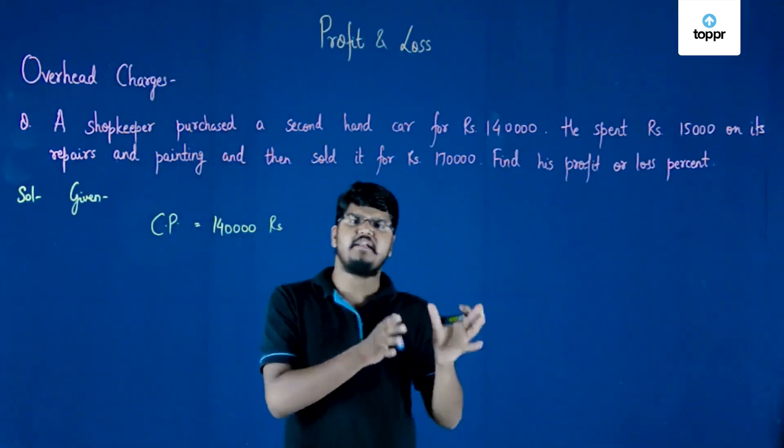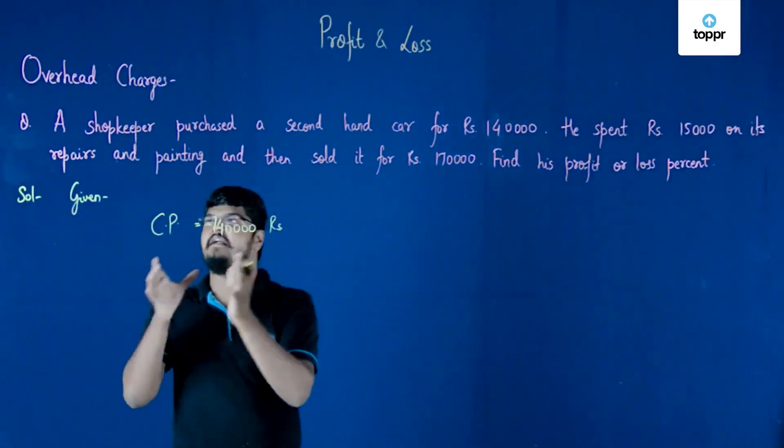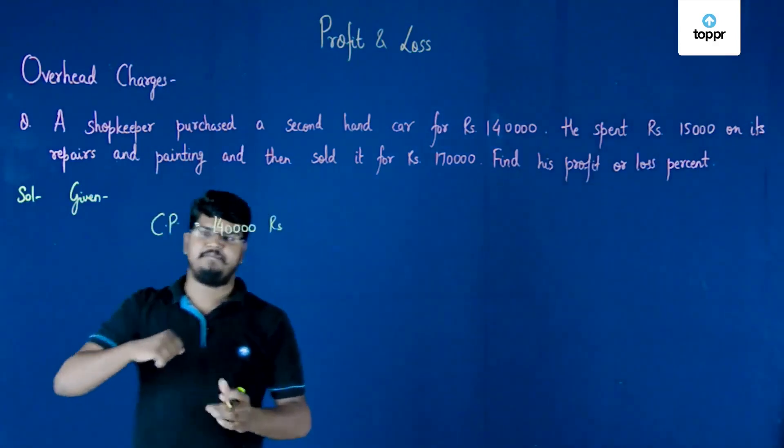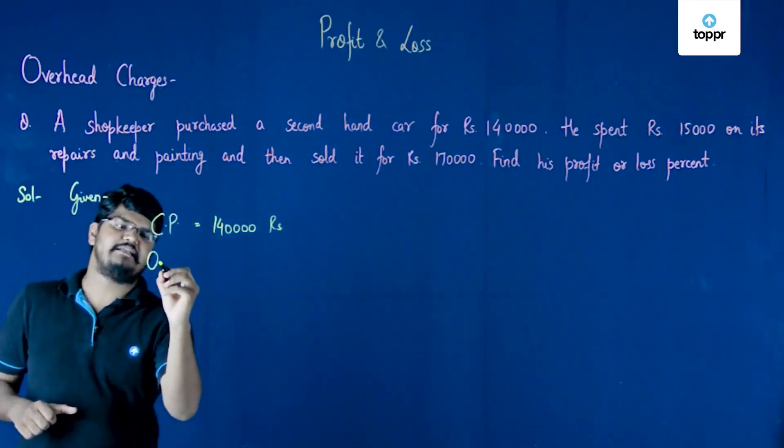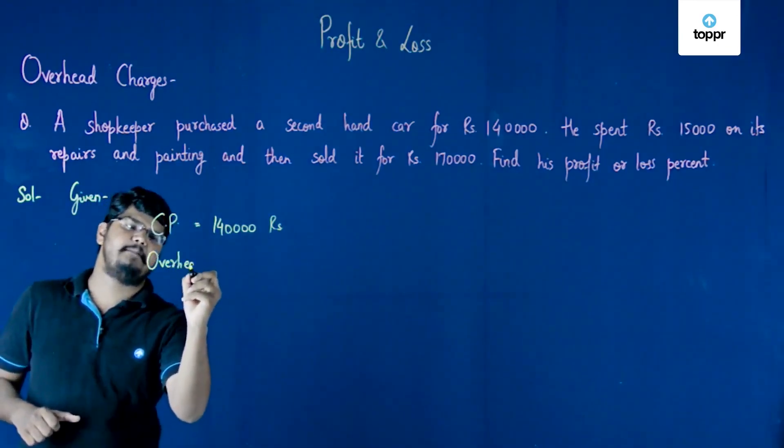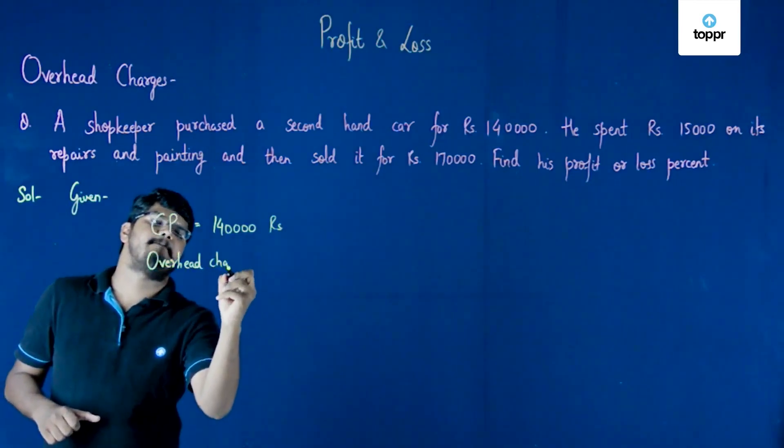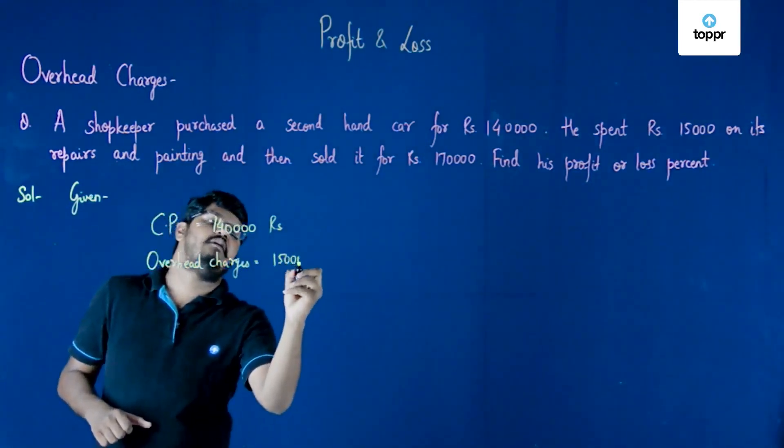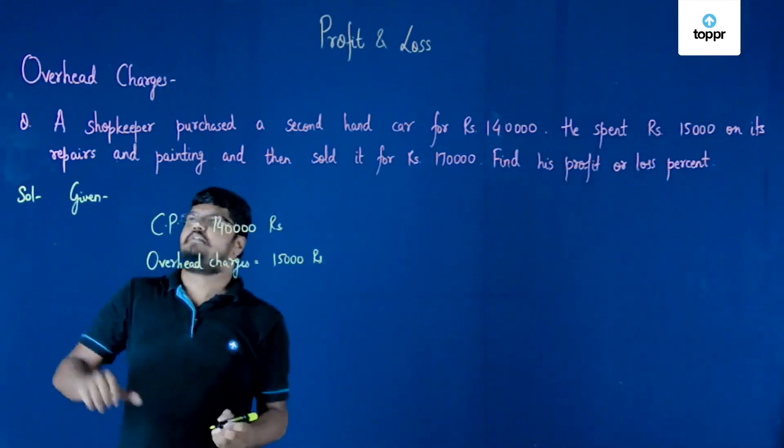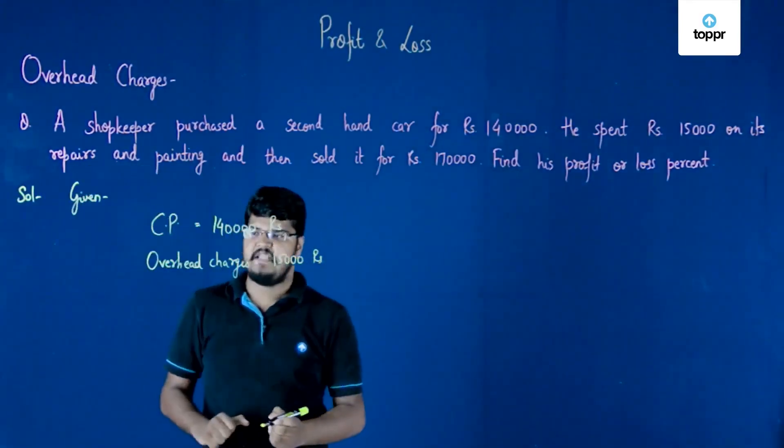The reason is that this guy has to spend rupees 15,000 on its repairs. This means that these are the overhead charges of the shopkeeper. So the overhead charges are 15,000 rupees which have been spent on its repairs and painting.